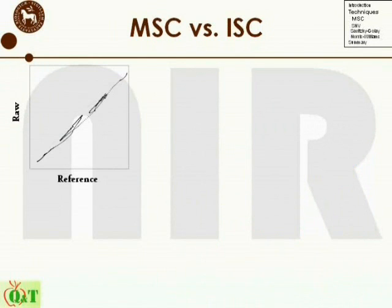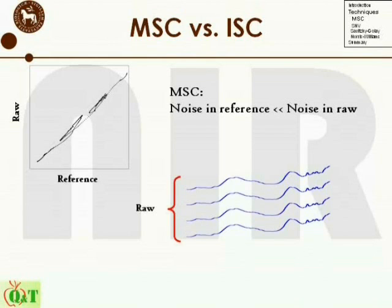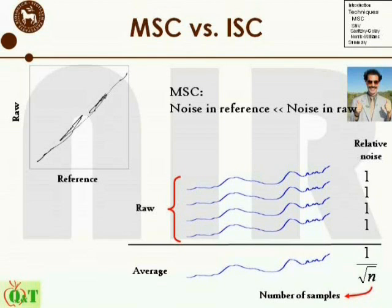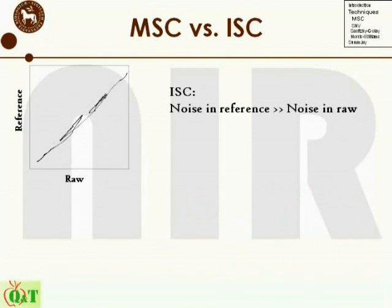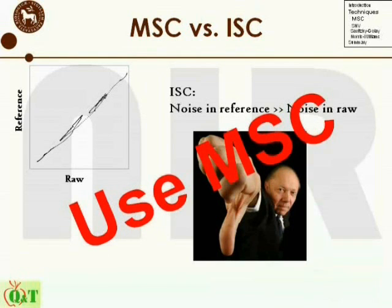In general, the difference between MSC and ISC is small. However, as linear regression is used in finding the parameters, MSC assumes that the noise in the reference spectrum is much smaller than in the raw spectrum. Normally the reference spectrum for MSC correction is the average over a set of samples, often the calibration set, and the noise level decreases by the square root of the number of samples — so this assumption holds in most cases. Opposed to this, ISC assumes that the error in the raw spectrum is much lower than in the reference, which is seldom the case. Therefore, we would not recommend using the inverse version of MSC.